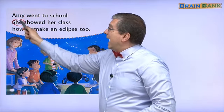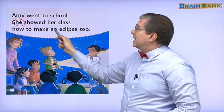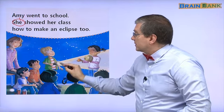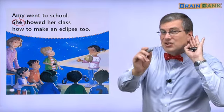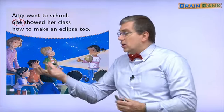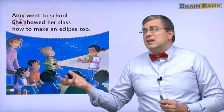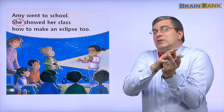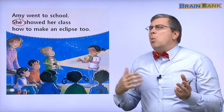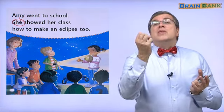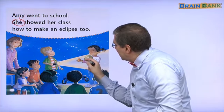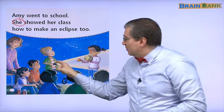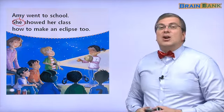Amy showed her class how to make an eclipse too. Here is Amy, here is her classmate, he's holding a flashlight. What is Amy holding? In her right hand, she's holding an orange. The orange is the moon. In her left hand, what is she holding? It's the melon. The melon is the earth. And here, we can see the shadow. The shadow is solar eclipse, because it's blocking the light on the earth.